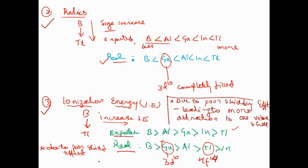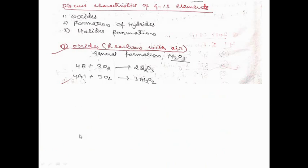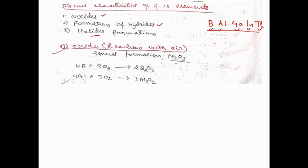These are the three important physical properties of group 13 elements. For your knowledge, almost all group 13 elements — boron, aluminum, gallium, indium, and thallium — form oxides, hydrides, and halides. For oxide formation: when metals of group 13 react with oxygen, they form a metal oxide with the general formula M2O3, where M can be any of these group 13 elements.